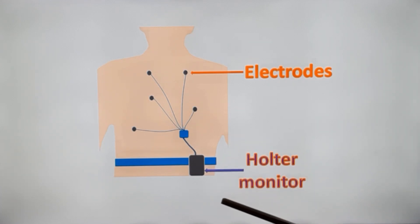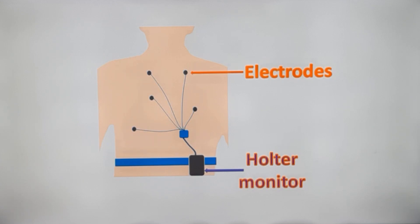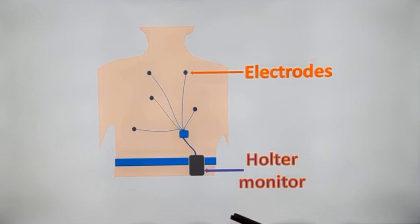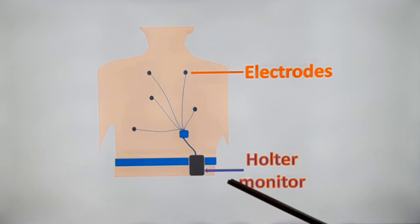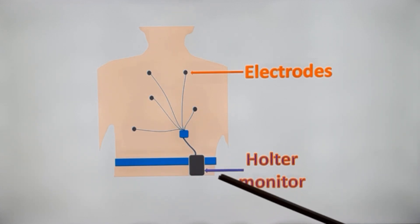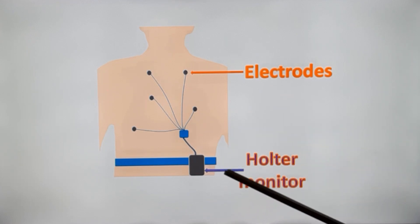Beyond standard Holter monitoring, wireless monitors are also available. A patch is attached on the chest and transmits signals through a mobile phone into the network, giving similar results to the Holter monitor. However, these are usually intermittent monitors — only important events are recorded rather than a continuous report. Holter is available in-house in most hospitals, while wireless patch monitoring depends on another service provider. So most often Holter is used first, with wireless remote monitoring for patients not suitable for the standard device.